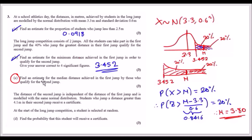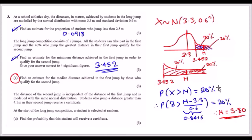Part (c): find the median distance for those who qualify for the second jump. We need the median of the top 40%. Splitting that group in half gives 20% on each side of the median m. So P(X > m) = 20%, or equivalently P(X < m) = 80%. Either approach works.